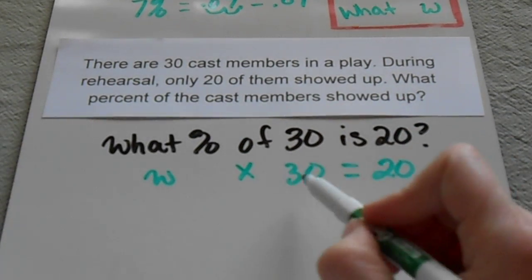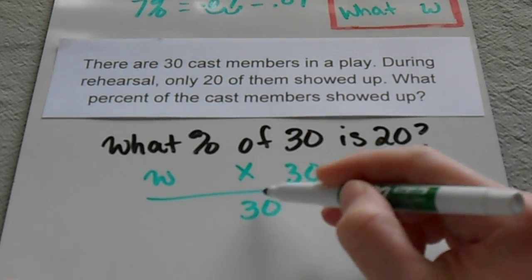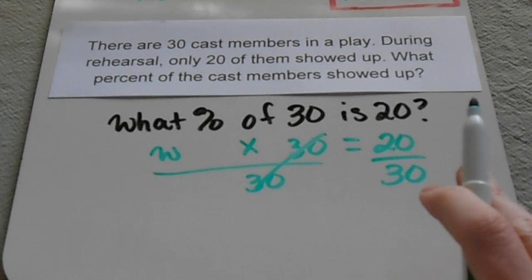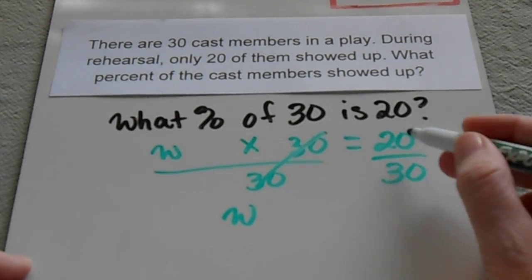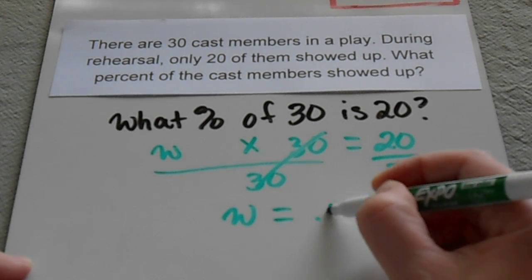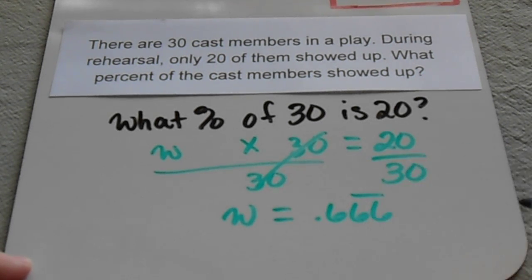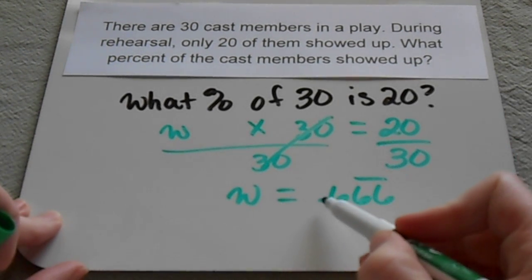Again, since my variable is being multiplied, I have to do the opposite and divide both sides. These two cancel out, and this is actually going to give me a decimal. When you divide this, it gives you a repeating number. So it's 0.666 and that actually just repeats. So we can round that, but I have one more step to do.